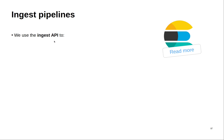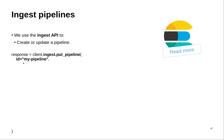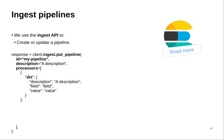We use the ingest API to create or update a pipeline. You can do this by using the PUT pipeline method — you give it the ID, which is how you identify your pipeline, and a description. Inside the processors attribute, you pass all the steps you want your pipeline to execute. For example, I have the set transformation, which will set a field with a value, and also the lowercase processor, which will lowercase the text inside a field. You should change these values to match what you have in your documents.